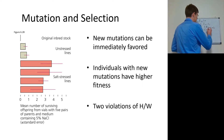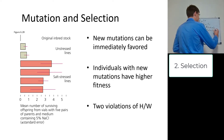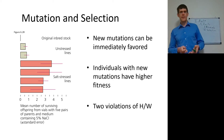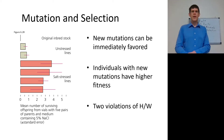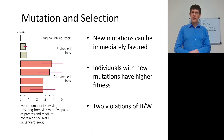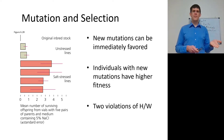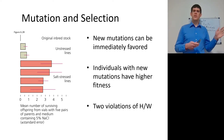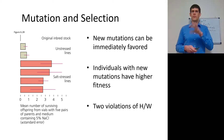If there's selection for a mutation, then it becomes beneficial. Here we have an example with Drosophila, the common fruit fly. You have an original inbred stock and then several populations either on an unstressed medium or a medium with increasing amounts of salt. Salt is not good for Drosophila. There are seven different populations: one original stock, two lines where mutations were allowed to accumulate, and four placed in solutions with 5% sodium chloride — salt-stressed lines.